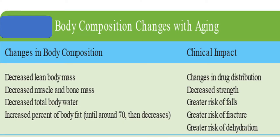Pathological problems include changes in body composition with aging. Decreased lean body mass leads to changes in drug distribution. Decreased muscle and bone mass leads to decrease in strength, decreased total body water, and greater risk of falls. Increased percent of body fat leads to greater risk of fracture or dehydration.